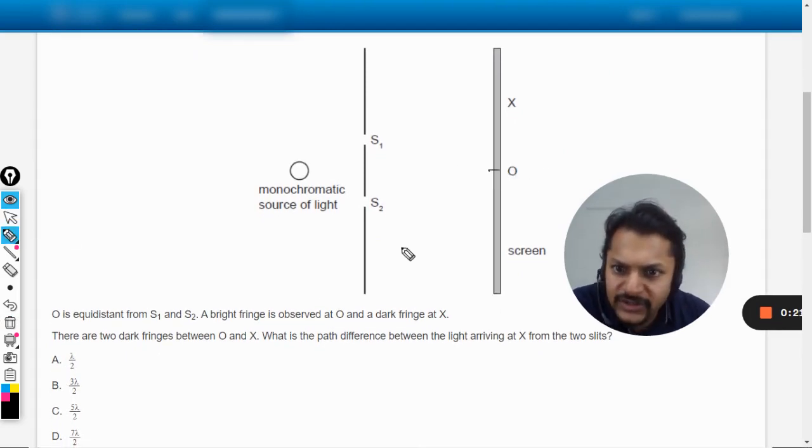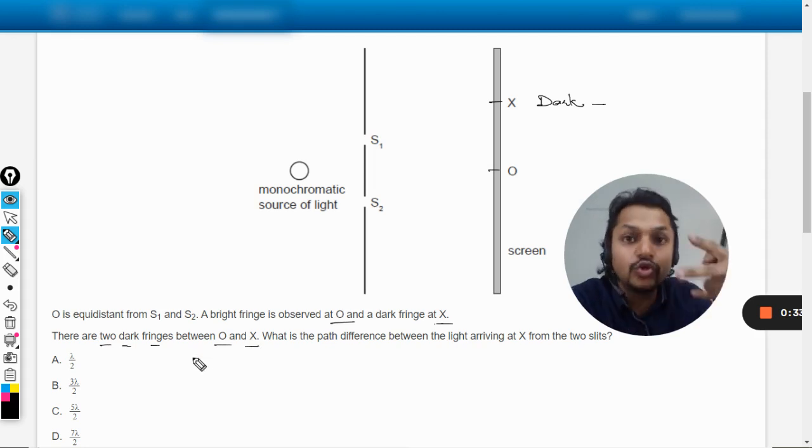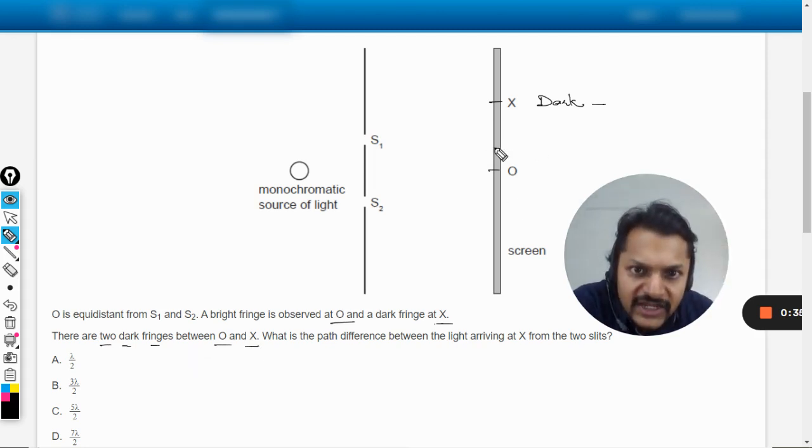So this is the central point. A bright fringe is observed at O and a dark fringe is observed at X. There are two dark fringes between O and X, so there should be the first dark, second dark, and then the third dark, equidistant.